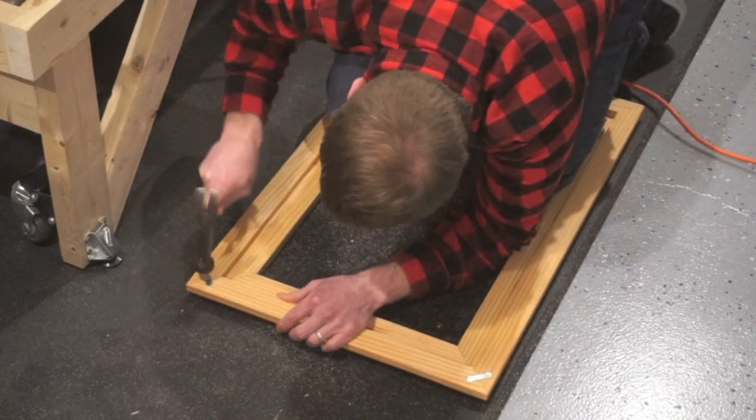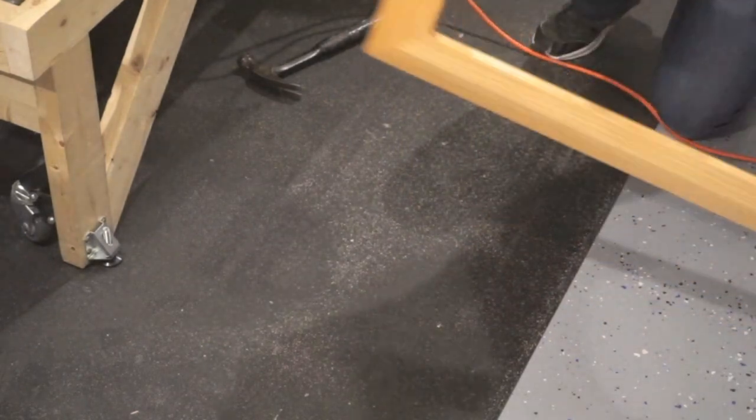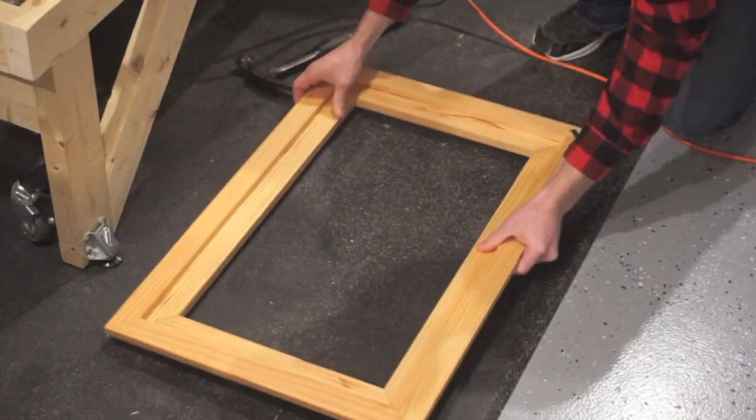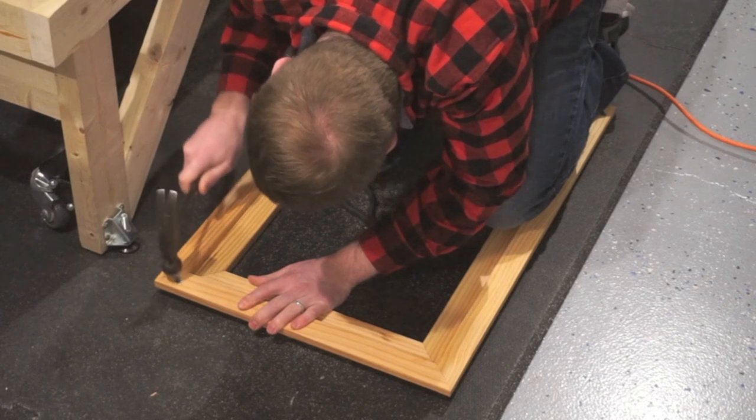Rather than cutting the frame corners to glue in splines or drilling holes to glue in dowel rods, we will reinforce these joints with simple metal joiners, which nail easily into the wood. We will mount these metal joiners to each of the four corners.